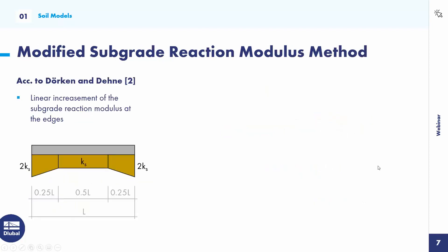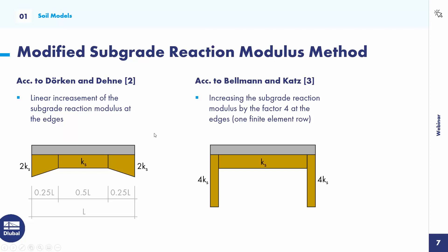To reduce the deficiencies of the subgrade reaction modulus method, there are different approaches. For example, according to Durkan and Dana, they suggest increasing the modulus at the edges — it's two times Ks, with a linear increase in that quarter. Another approach is according to Bellman and Katz; they suggest increasing the subgrade reaction modulus by a factor of 4 at the edges, and suggest using one finite element row.